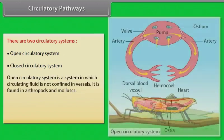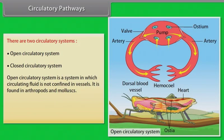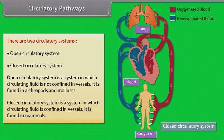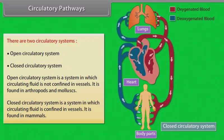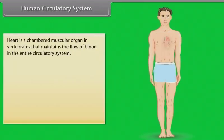An open circulatory system is one in which circulating fluid is not confined in vessels; it is found in arthropods and mollusks. A closed circulatory system is one in which circulating fluid is confined in vessels; it is found in mammals. The human circulatory system: the heart is a chambered muscular organ in vertebrates that maintains the flow of blood in the entire circulatory system.